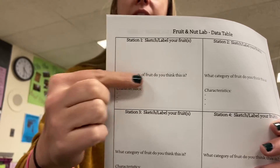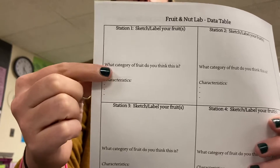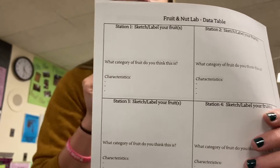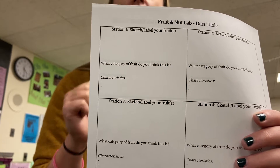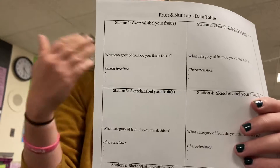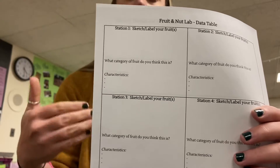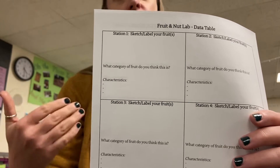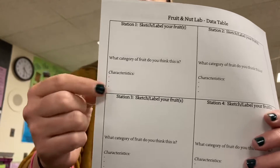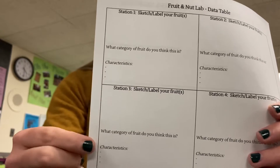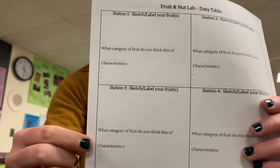You're going to identify which category of fruit, nut, or seed it belongs to. This is when you talk to your group members and ask, okay, is it a drupe? Is it a palm? You all figure it out. And then you're going to write down some of those main characteristics — how did you identify it as that type of fruit?